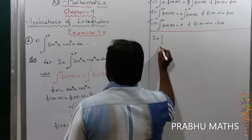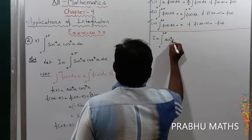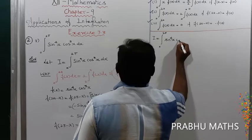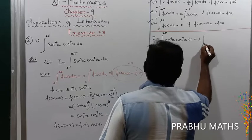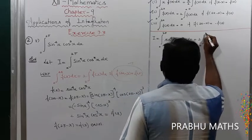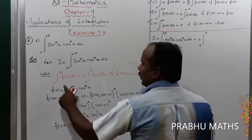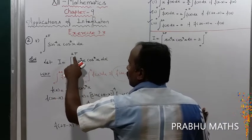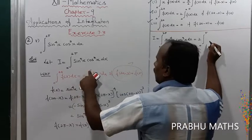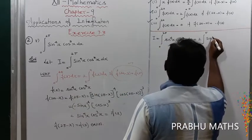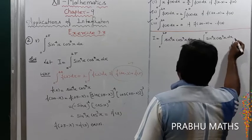So I = 2∫₀π sin⁴(x) cos³(x) dx. Here 2a = 2π, so a = π. The integral from 0 to 2π reduces to 2 times the integral from 0 to π of sin⁴(x) cos³(x) dx.